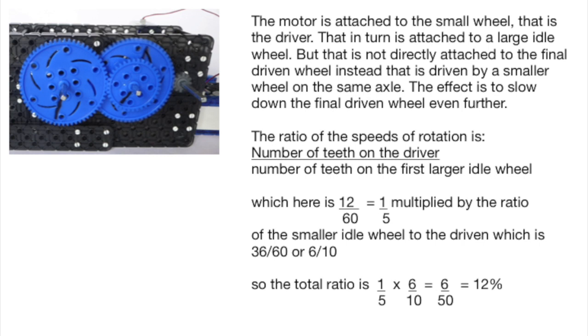The ratio of the smaller idler wheel to the driven wheel is 36 to 60 or 6 to 10. So the final total ratio is the two multiplied together. That's 1 fifth times 6 tenths which is 6 fiftieths or 12 percent of the original speed on the final driven wheel.